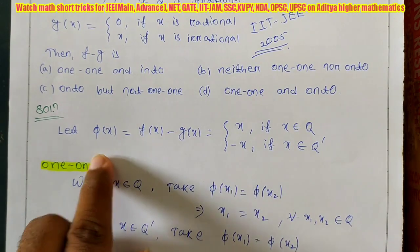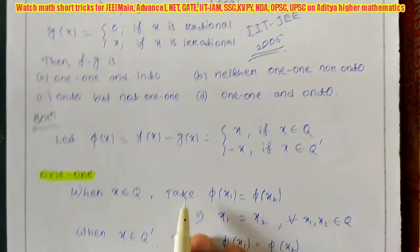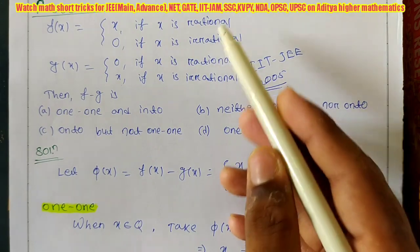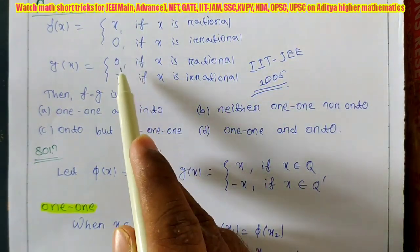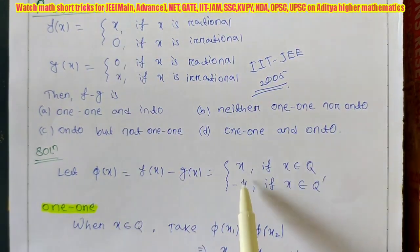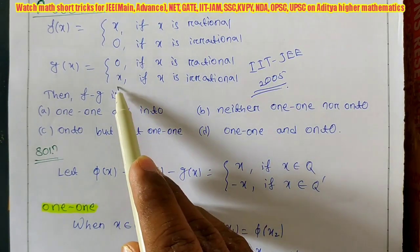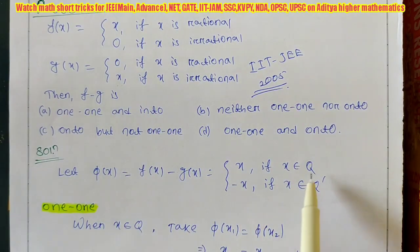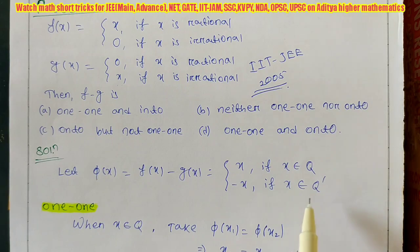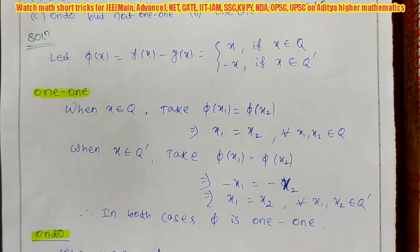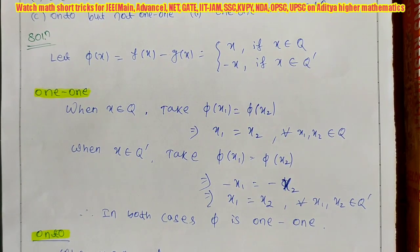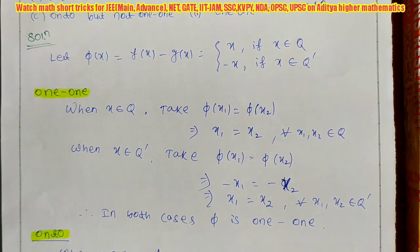Let me define φ(x) = f(x) - g(x). When x is rational, f(x) = x and g(x) = 0, so φ(x) = x - 0 = x. When x is irrational (Q'), f(x) = 0 and g(x) = x, so φ(x) = 0 - x = -x. Now I will apply the one-to-one condition: φ(x₁) = φ(x₂) implies x₁ = x₂.